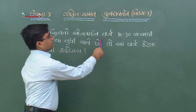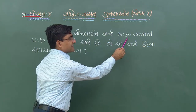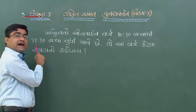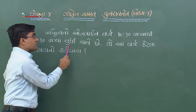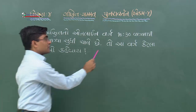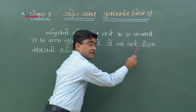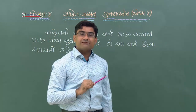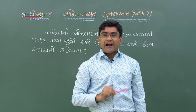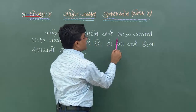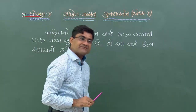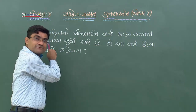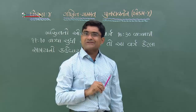ચાલો, એક દાખલો સમજી લઈએ. ગણિતનો ઓનલાઇન વર્ગ 10 કલાક 30 મિનિટ વાગ્યાથી 11 વાગ્યા 10 મિનિટ સુધી ચાલે છે. તો આ વર્ગ કેટલા સમયનો? ગણિતનો ઓનલાઇન ભણવાનું 10 કલાકે શરૂ થાય છે અને 11 કલાક 10 મિનિટ સુધી ચાલે છે - આ ગણિતનો તાસ કેટલા સમયનો?